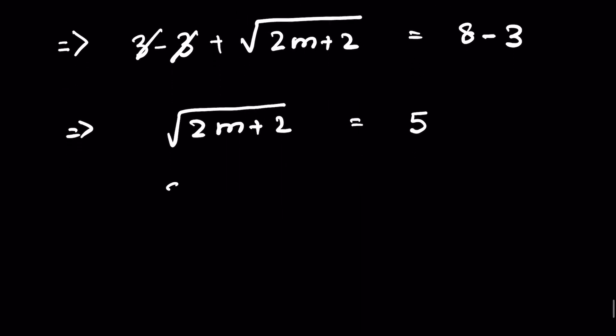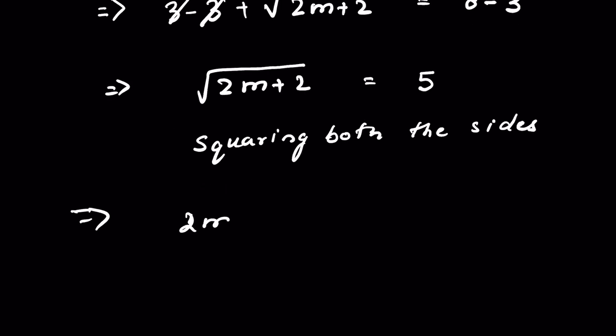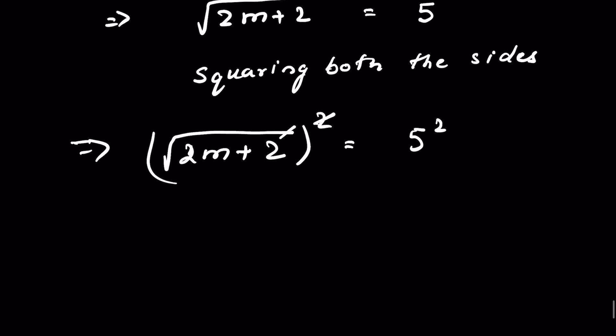To remove the square root, we square both sides. So square root of 2m plus 2 raised to the power 2 equals 5 squared. Remove the square root with the square. So we have 2m plus 2 equals 25.